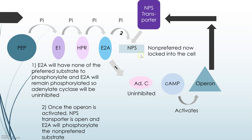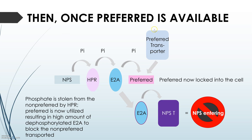Once the preferred substrate is introduced into the cell, HPr will steal the phosphate from the non-preferred substrate and pass it to E2A. E2A then phosphorylates the preferred substrate to lock it in, and the dephosphorylated E2A binds to the non-preferred substrate transporter so it can no longer let non-preferred substrates enter. Because the non-preferred substrate is now dephosphorylated, it flows out of the cell as it is no longer locked in.